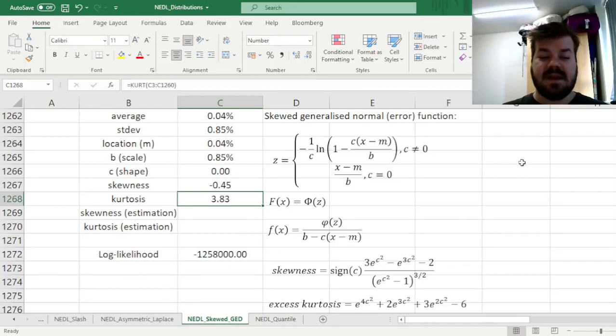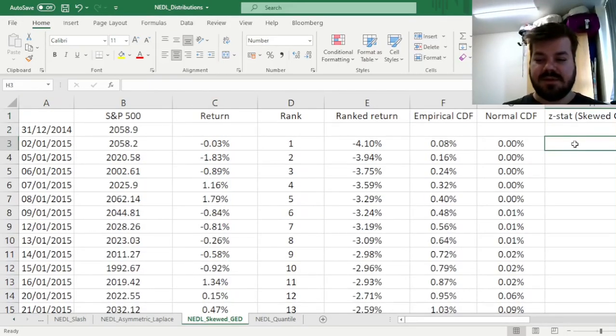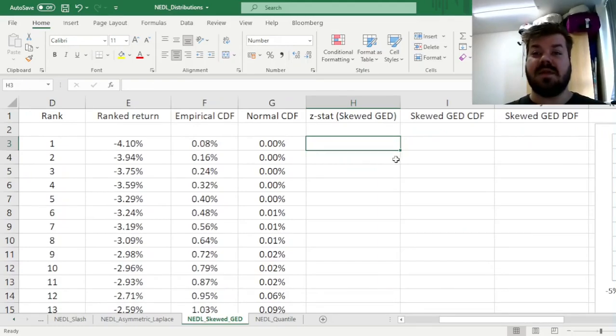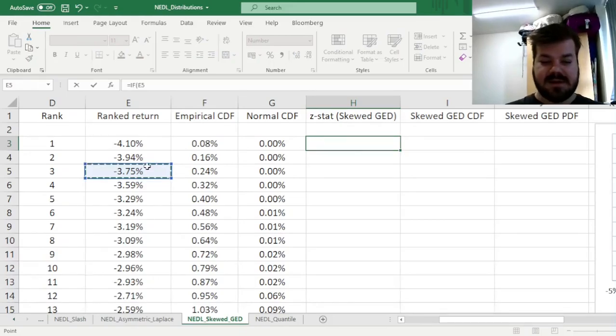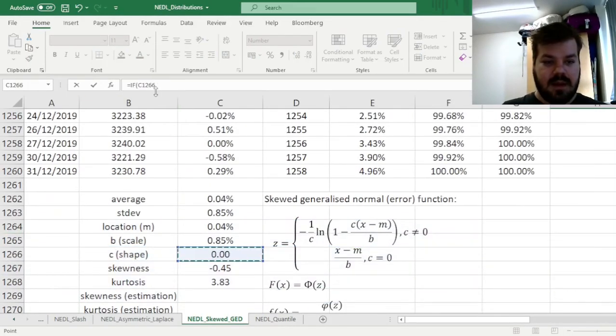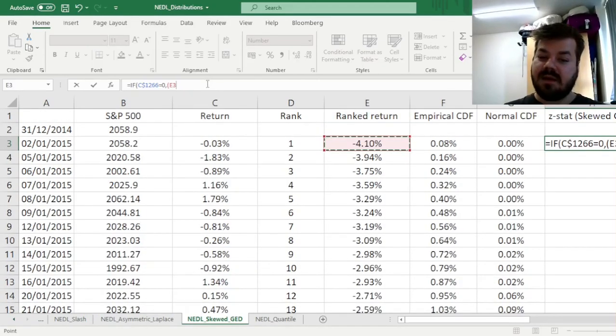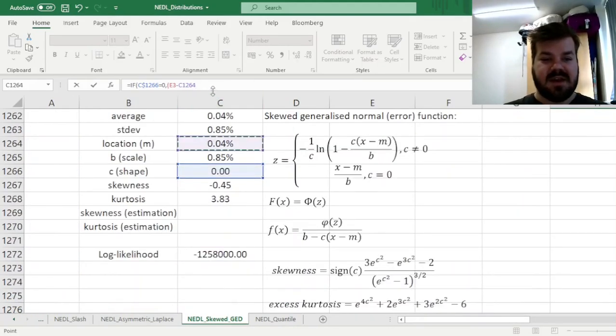And now, let's start with our parameterization. So first, for simplicity, let's calculate this adjusted Z-stat. So first of all, if our shape parameter that we've got over here, and we need to lock the row, is equal to 0, then it's just your usual Z-stat, meaning that we just need to input the ranked return over here in cell E3, subtract the location parameter M that we have got over here, lock in the row as well, and adjust it by the scale parameter B over here, lock in the row as well.